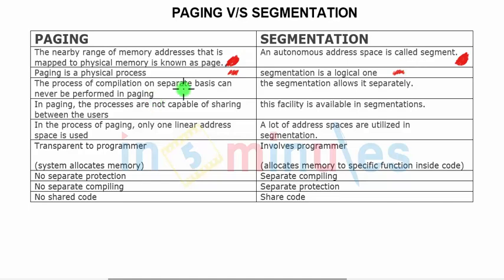The process of separate compilation can never be performed in paging because pages cannot be executed separately — they are part of one large core, just physically divided into smaller entities called pages which are loaded and unloaded. Whereas in segmentation, segments can be executed and handled separately. For example, when a code segment is executed, it would need the resource segment, but the stack remains a separate segment and is only loaded during execution when needed.